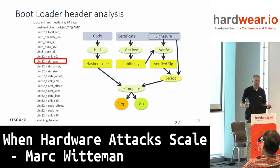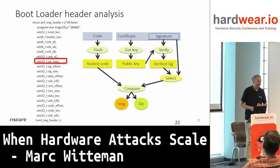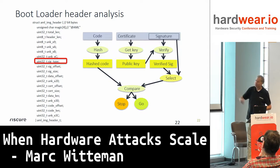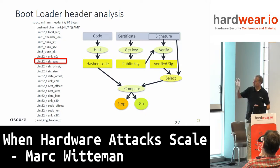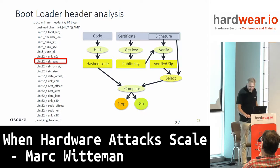Why is this backdoor there? Probably part of the development testing process — a developer building the software, needing to test it, didn't have access to a private key to sign the software, so used a simple backdoor during development to test the mechanism, planning to remove it later. That never happened. So the attacker used a simple hardware attack, did binary analysis, found the vulnerability, and is now able to load any software on the device — basically meaning he is in control.